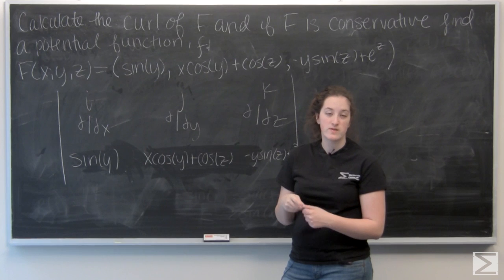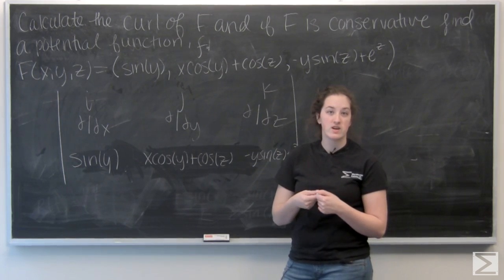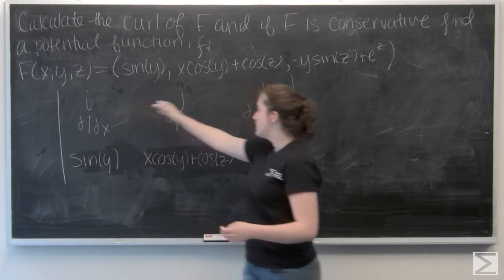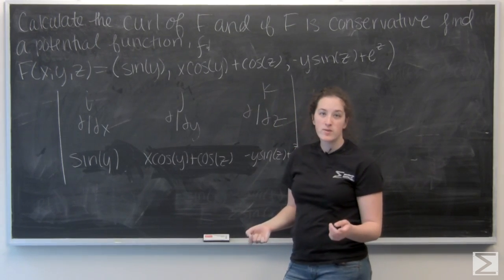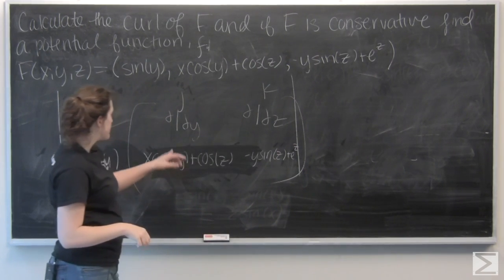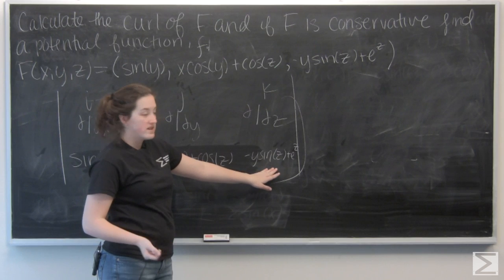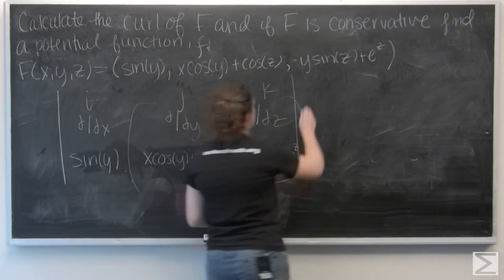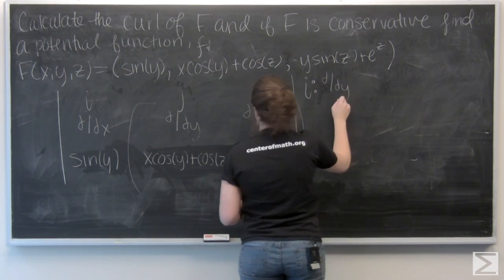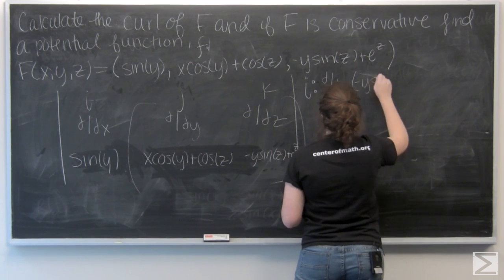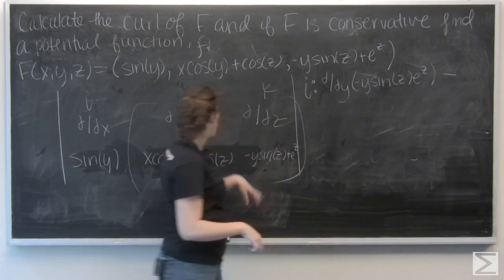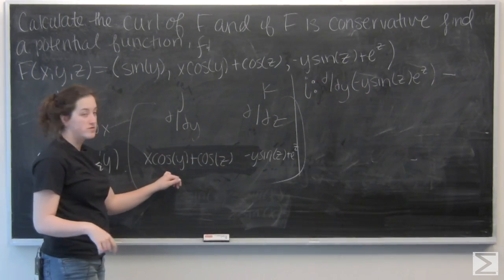I want to take the determinant of this 3 by 3 matrix using cofactor expansion. So first let's find the i component — cut this column and this row and find the determinant of this 2 by 2 matrix. So I'm going to have ddy times negative y sine of z e to the z, subtract ddz times x cosine y plus cosine of z.